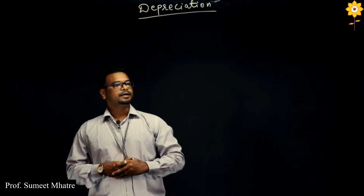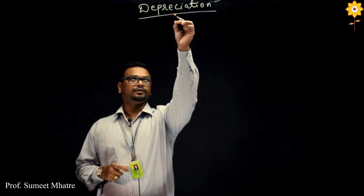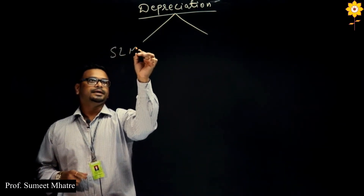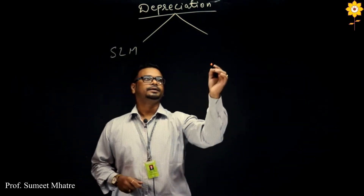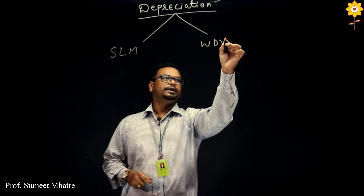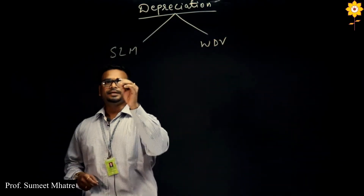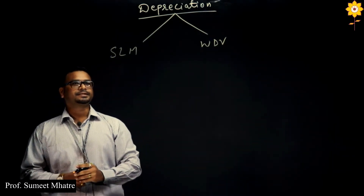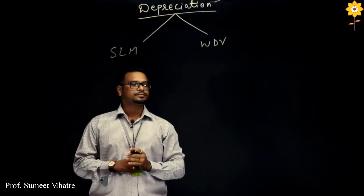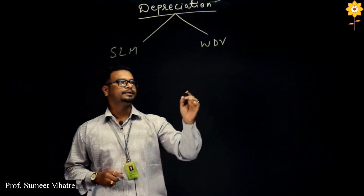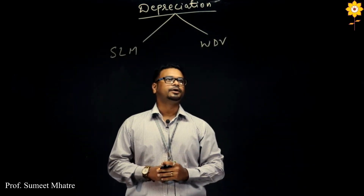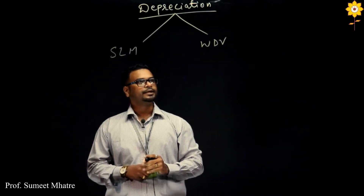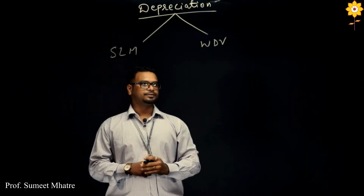In depreciation, there are two methods which we normally follow: that is SLM, that is Straight Line Method, and WDV, that is Written Down Value. Now in Straight Line Method, every year the depreciation is calculated at a single percentage, and in Written Down Value method, the depreciation we are going to calculate will depend upon the balance of every year.